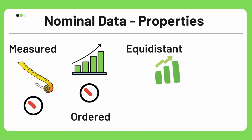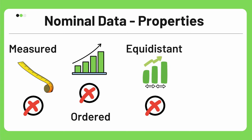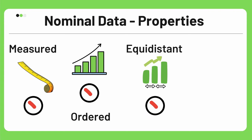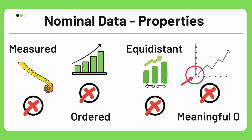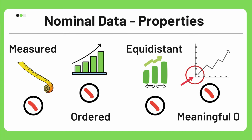Third, nominal data is not equidistant — for example, you cannot compare a person with black hair to a person with red hair in terms of distance. Fourth, it doesn't have a meaningful zero — for example, you cannot say 'zero black hair' because it makes no sense.